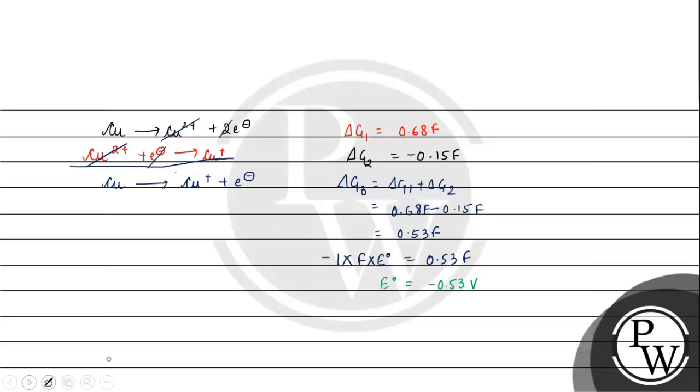Now this reaction, Cu to Cu⁺ plus electron, has E° equal to -0.53V. And the other reaction, Cu²⁺ to Cu⁺, has E° equal to 0.15V.